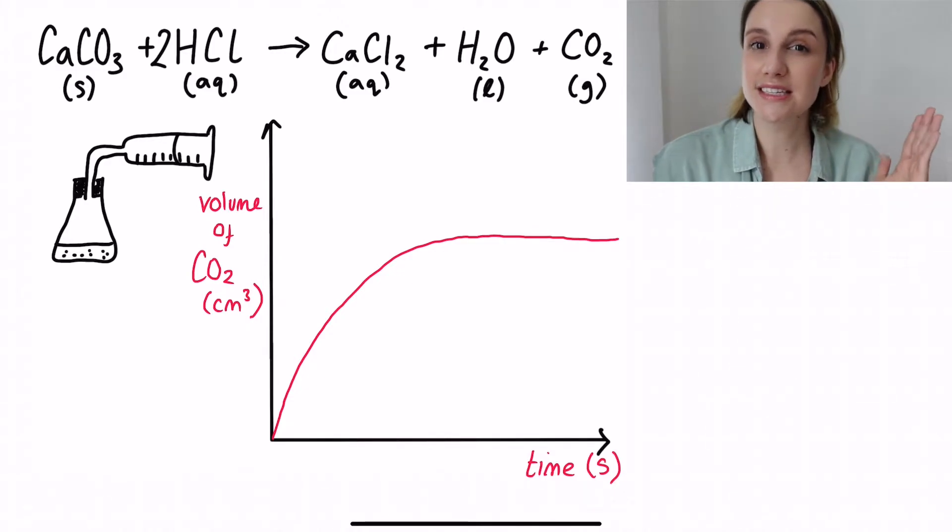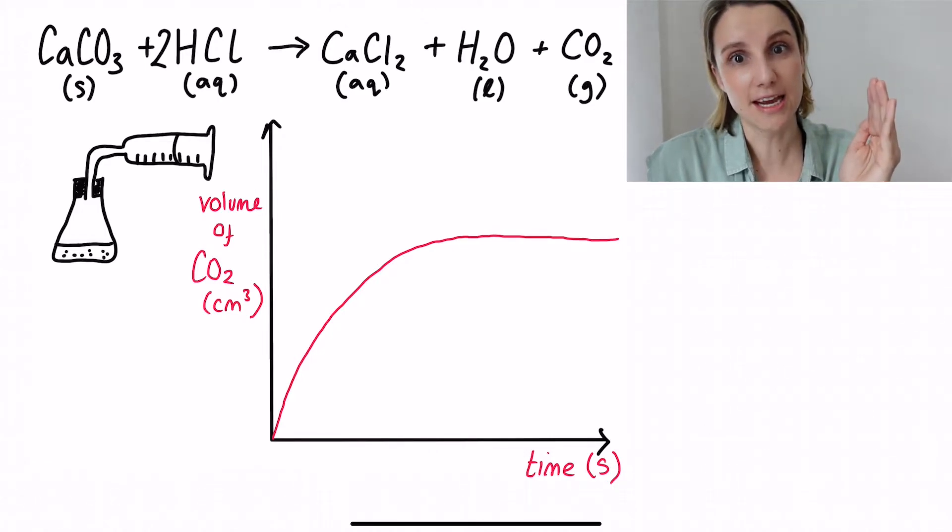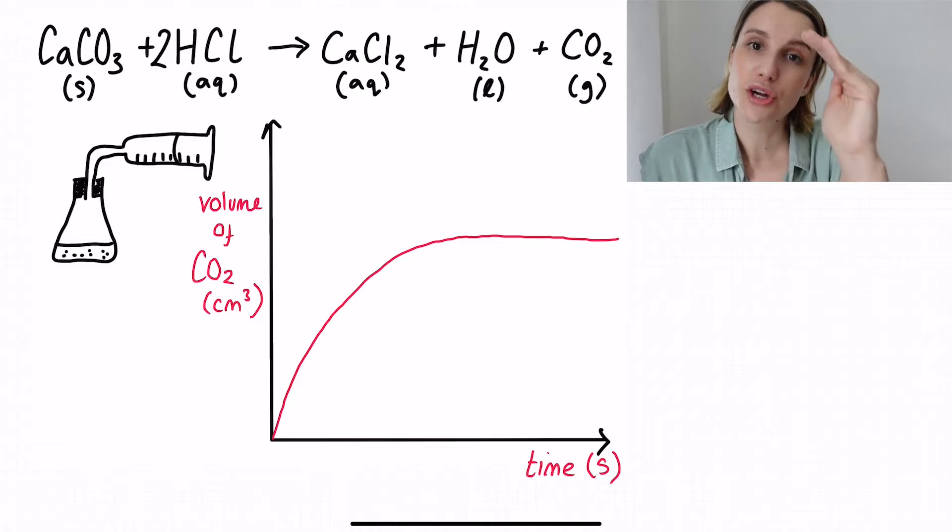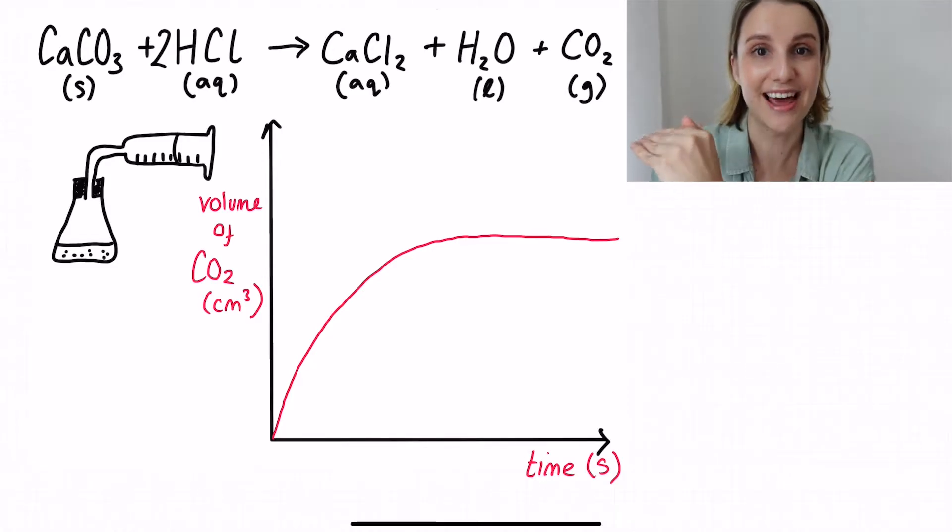You can see it's super steep in the beginning, which means that it's going really fast at the beginning. And then as the reaction goes on, it kind of flattens out until it gets flat, which means that the reaction has completed or it has stopped. So this is your characteristic rate of reaction graph.